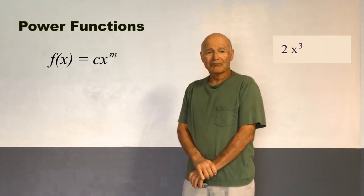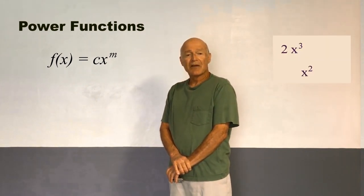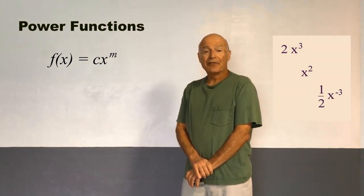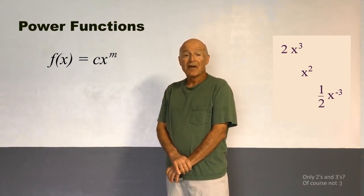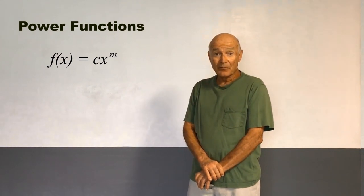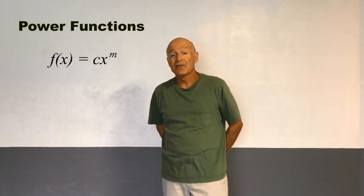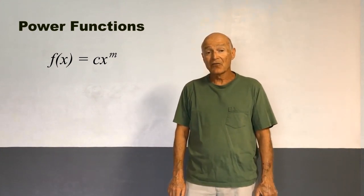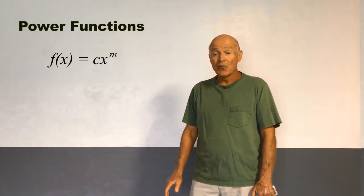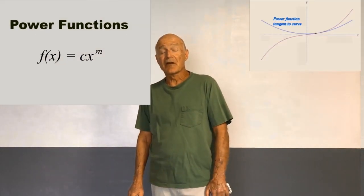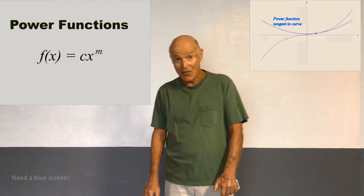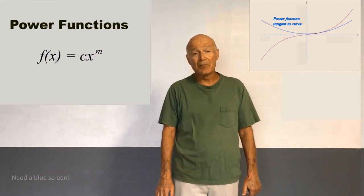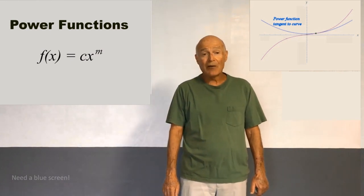For example, 2x^3, x^2, (1/2)x^(-3) - these are all examples of power functions. The power functions play the same role in bi-geometric calculus that linear functions play in classical calculus. In fact, we use power functions in the bi-geometric calculus as tangent curves. It turns out that linear functions are not the only functions that can be used as tangents. In the bi-geometric calculus, we use the power functions.